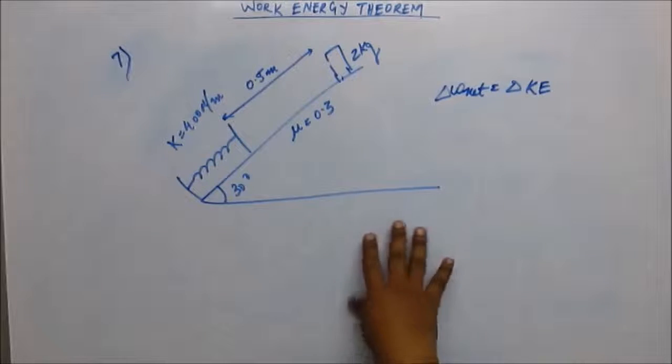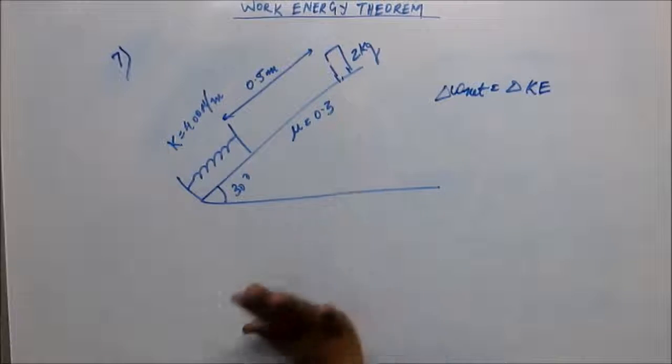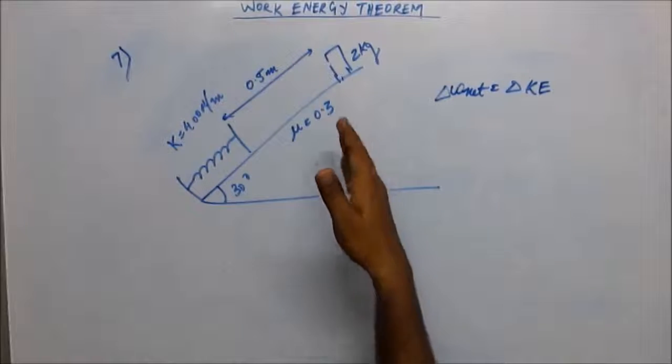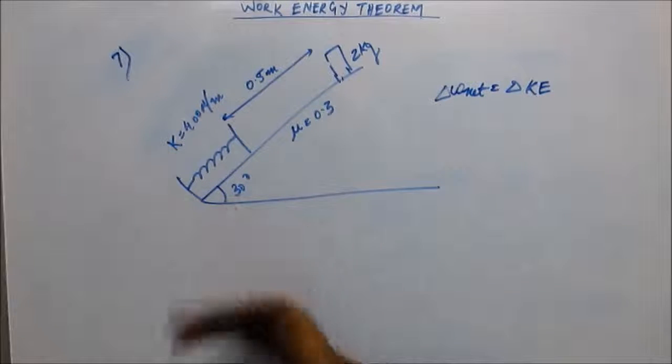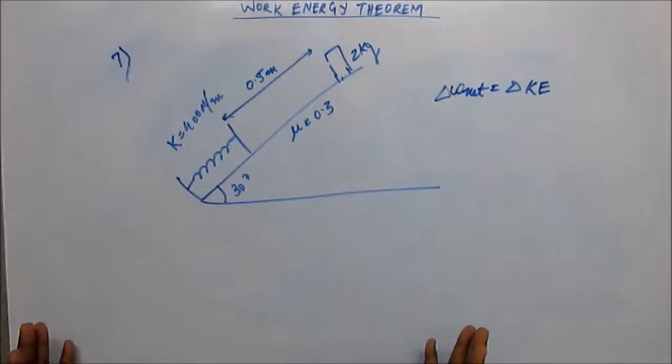Net work done - we have to look for which forces will be doing work. Normal reaction will not do any work. Work will be done by gravitational force, friction force, and spring force. You add the work of these three and the net work done should be zero. That's what work energy theorem tells.